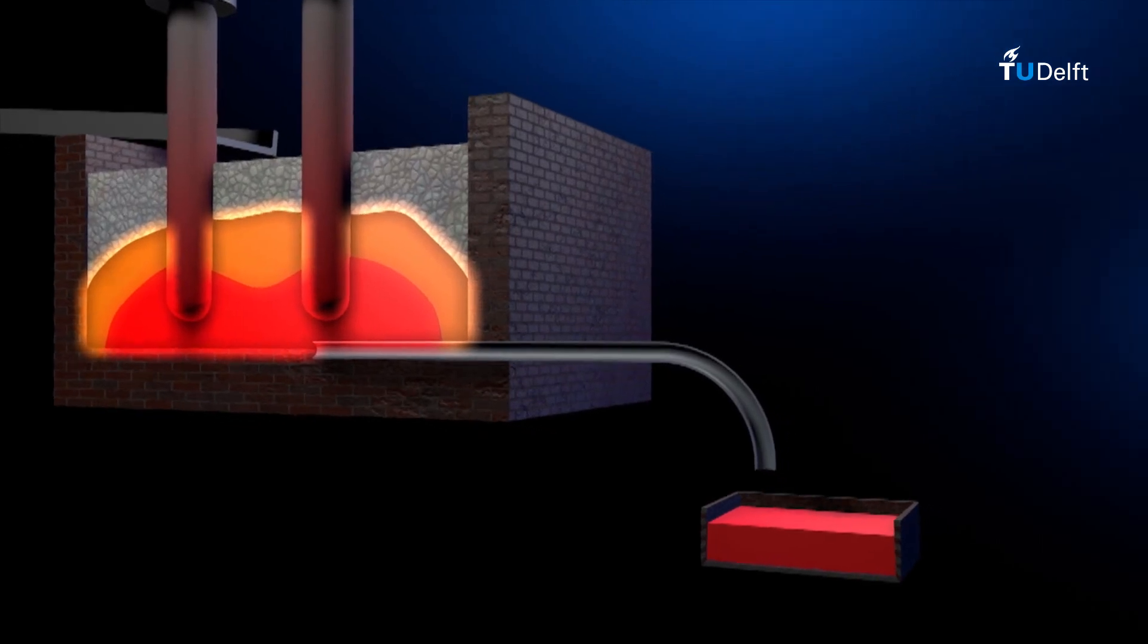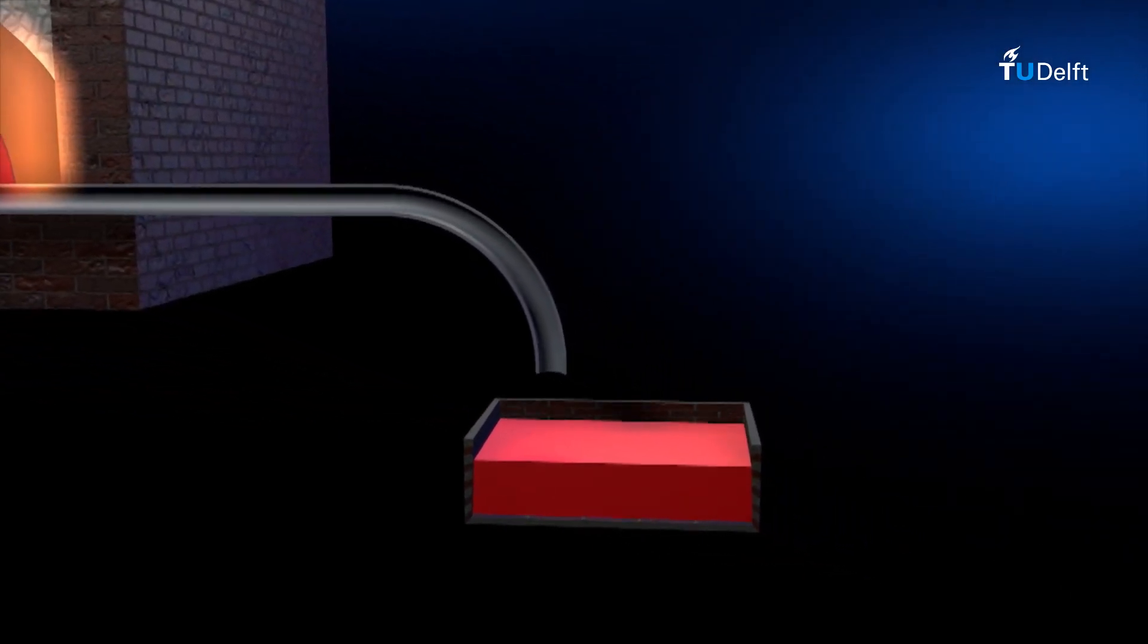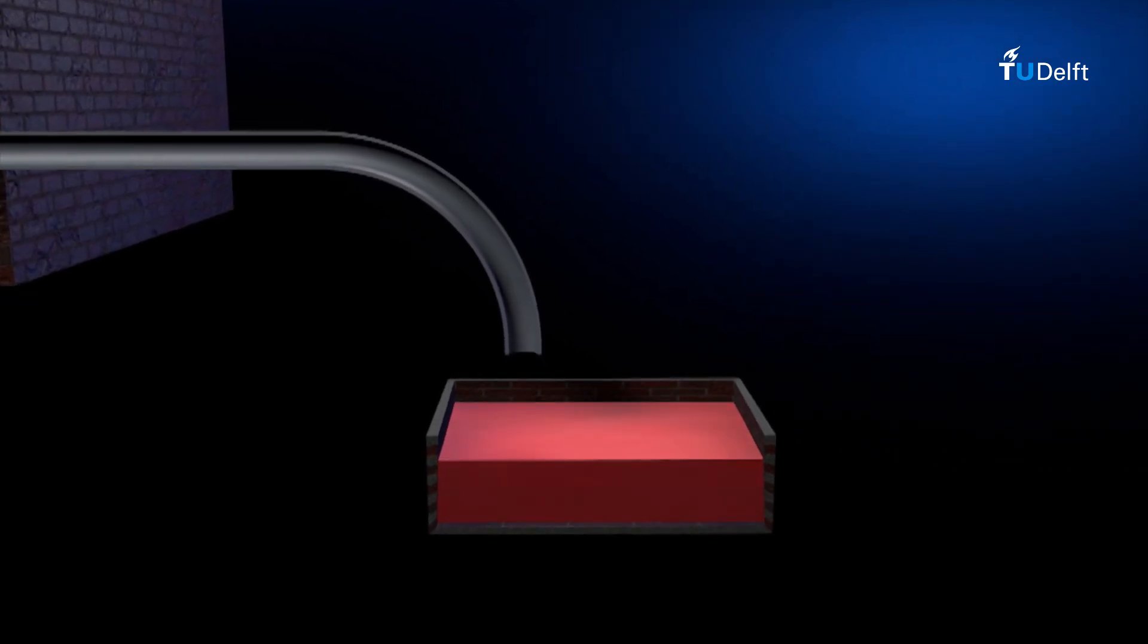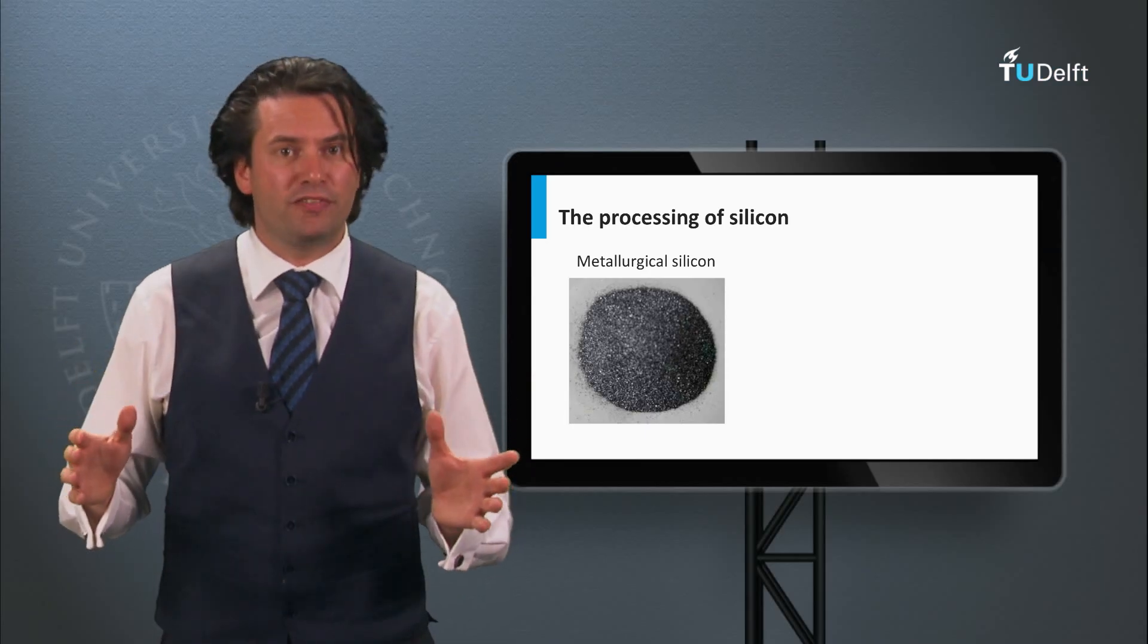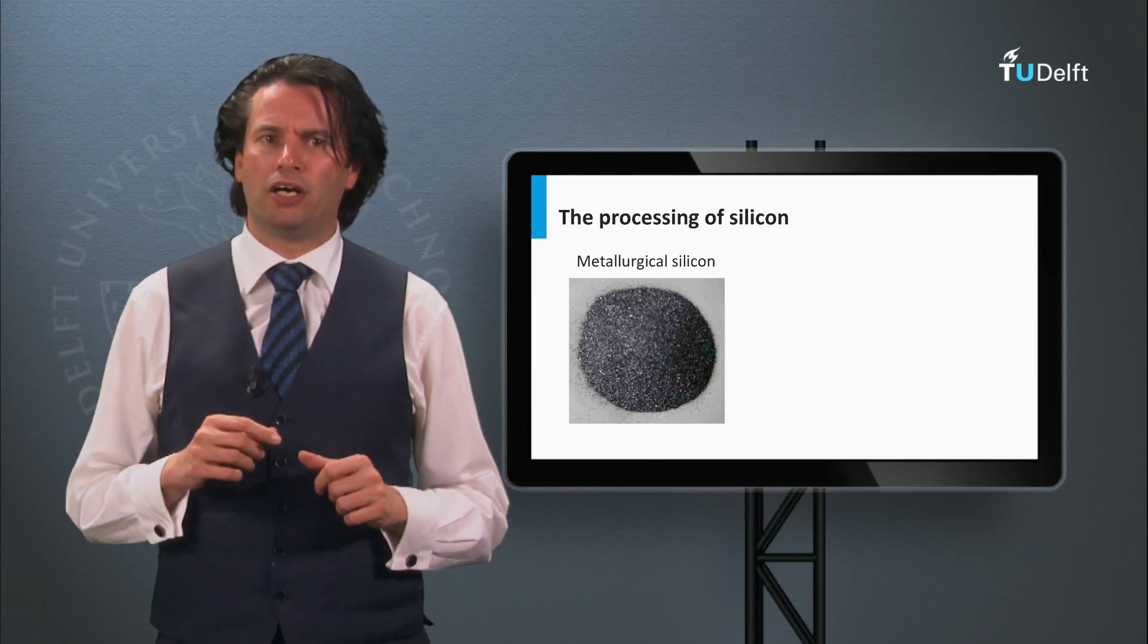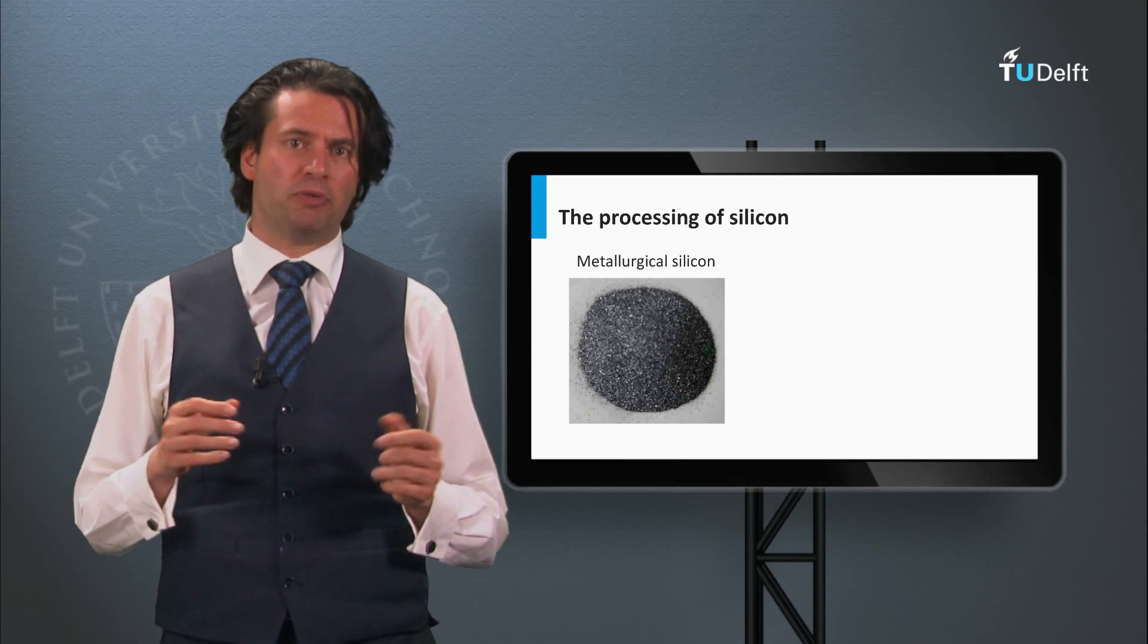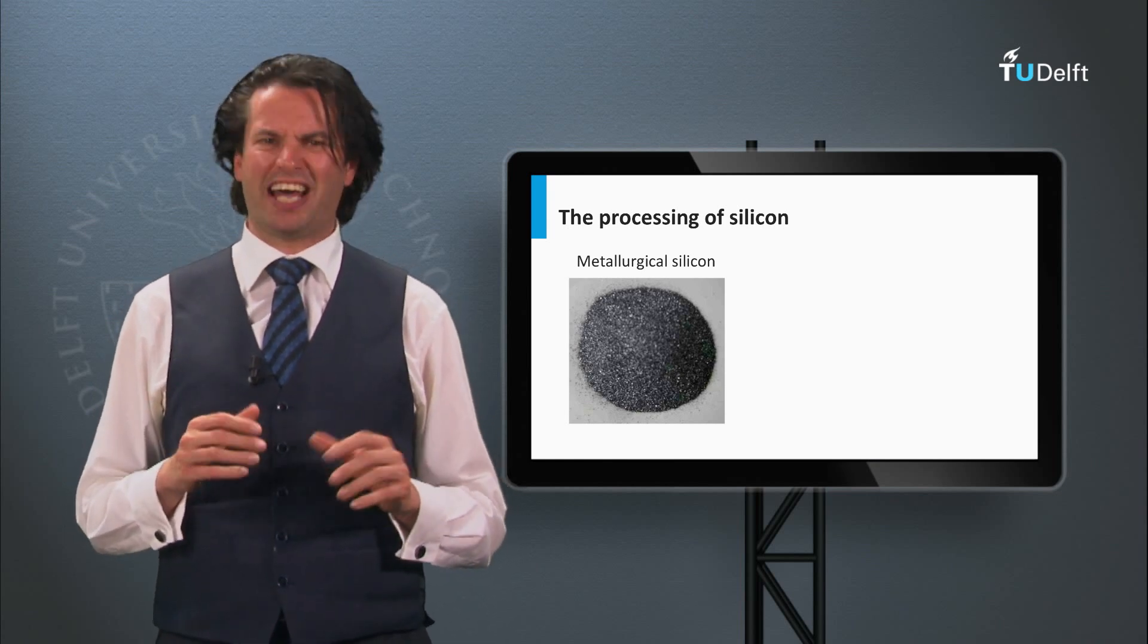The melted silicon that is formed is drawn off the furnace and solidified. The purity of metallurgical silicon is around 98 up to 99%. 70% of the worldwide produced metallurgical silicon is used in the aluminum casting industry to make aluminum silicon alloy parts which are used in automotive engine blocks.